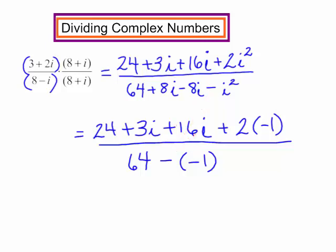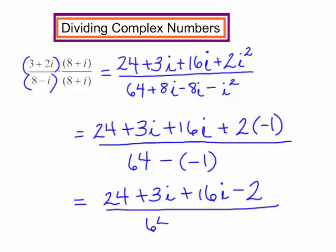Let's keep working. I'm continuing to simplify. In the numerator, I have 2 times negative 1, that will be negative 2. In the denominator, I will now have 64 plus 1. We have more simplifying to do.